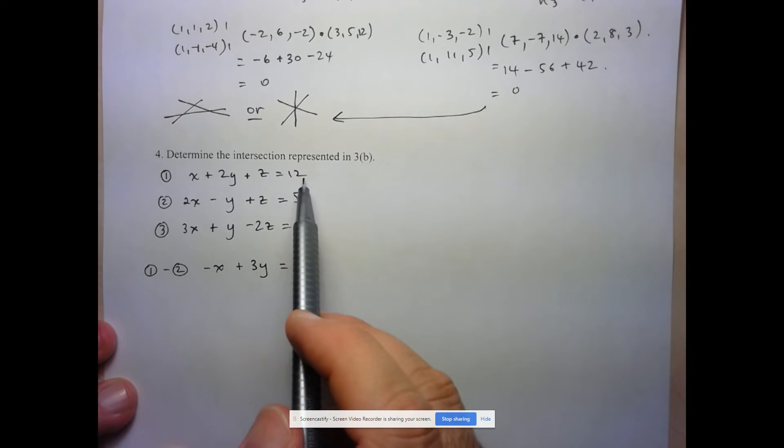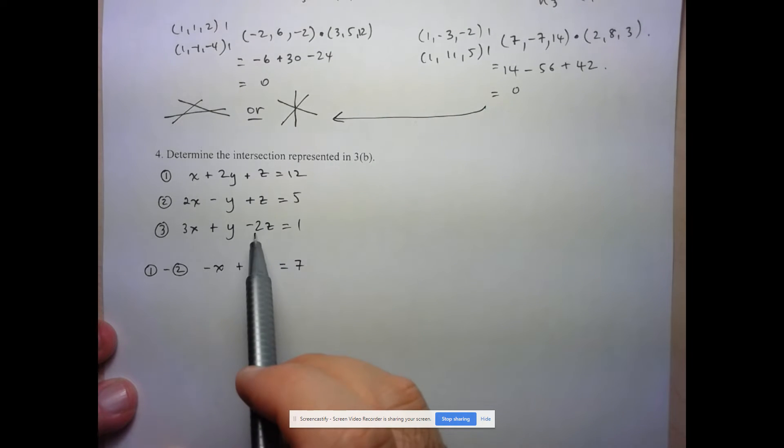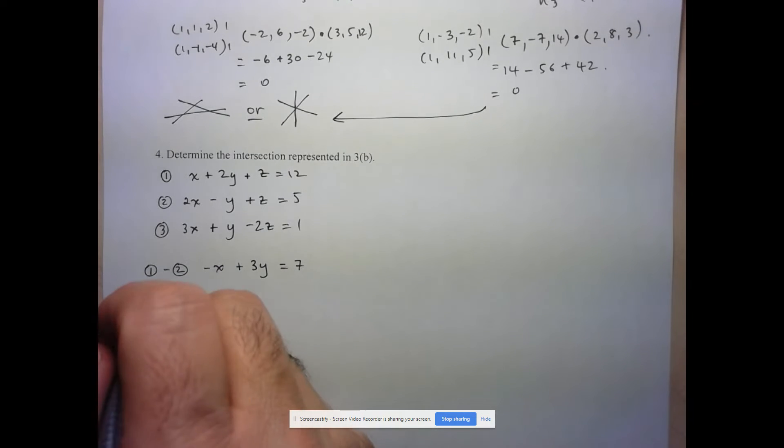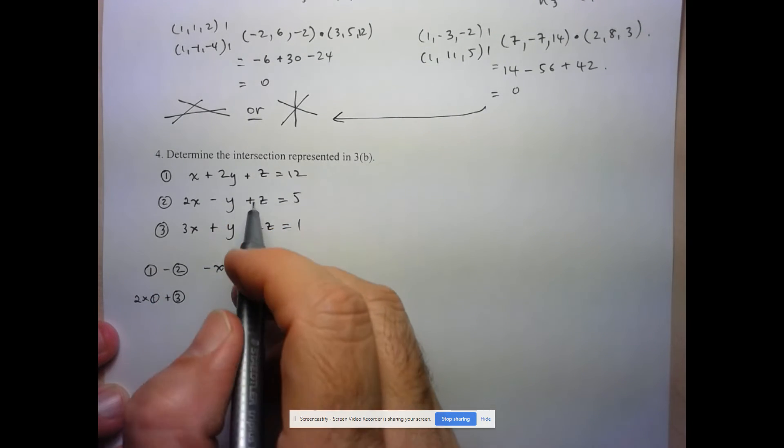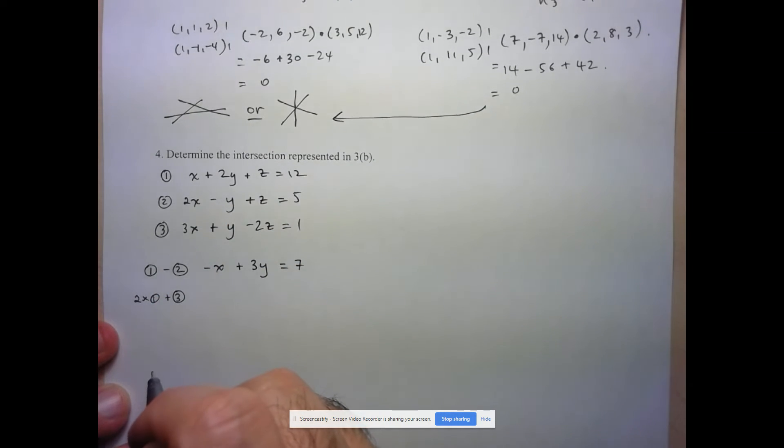But I'm going to have to multiply equation 1 by 2 so that I get a similar coefficient as the z here. So I'm going to do 2 times equation 1, and I'm going to add equation 3 because the signs are opposite.